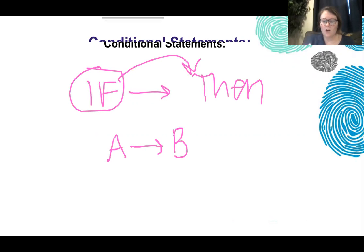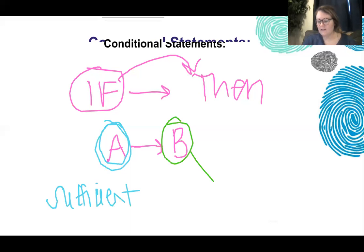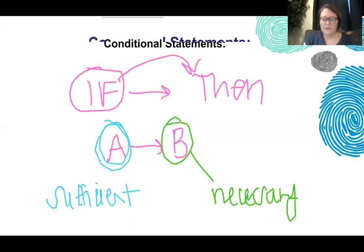On LR, what we refer to this as: the first one is our sufficient condition, and the B condition is our necessary condition. A lot of people struggle with this. So if we have A — if A — that is sufficient.